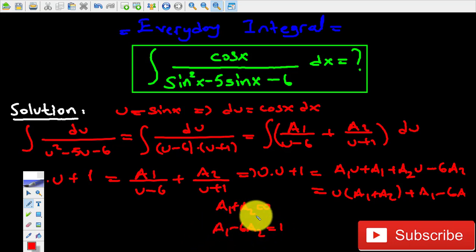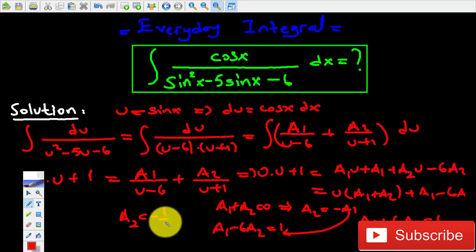From here, A2 is going to be equal to negative A1. If you put it into the second equation and solve it, we're going to end up with A1 plus 6A1 equals one. If you solve this equation for A1, you're going to get one over seven. For A2, we're going to get negative one over seven.